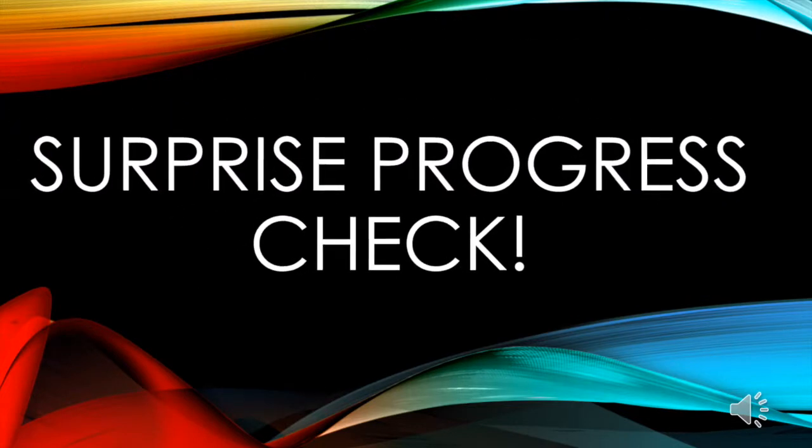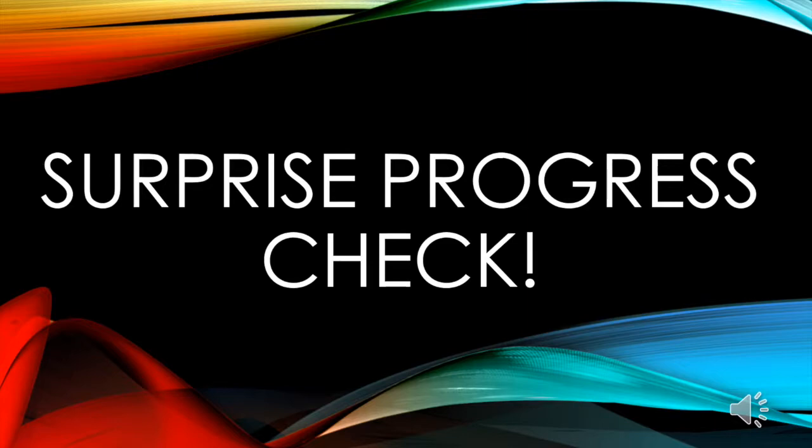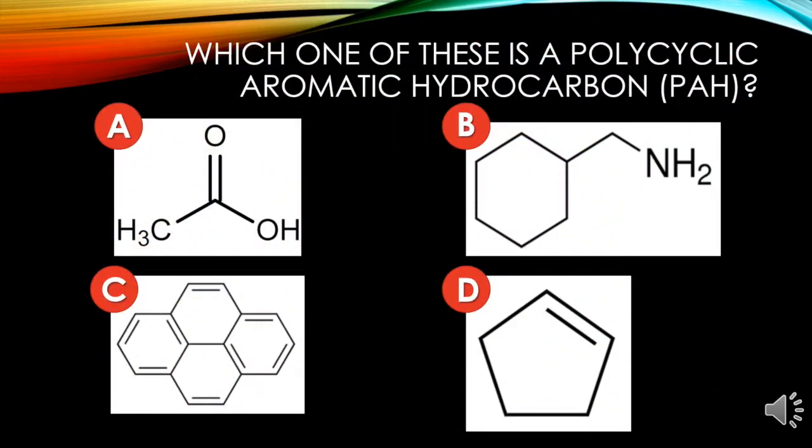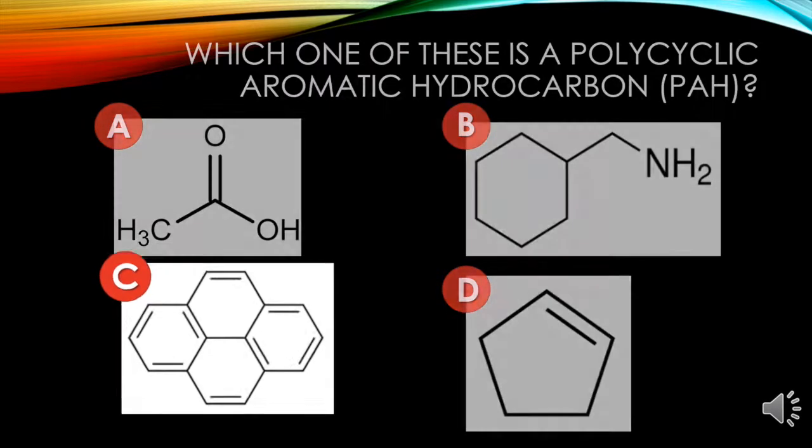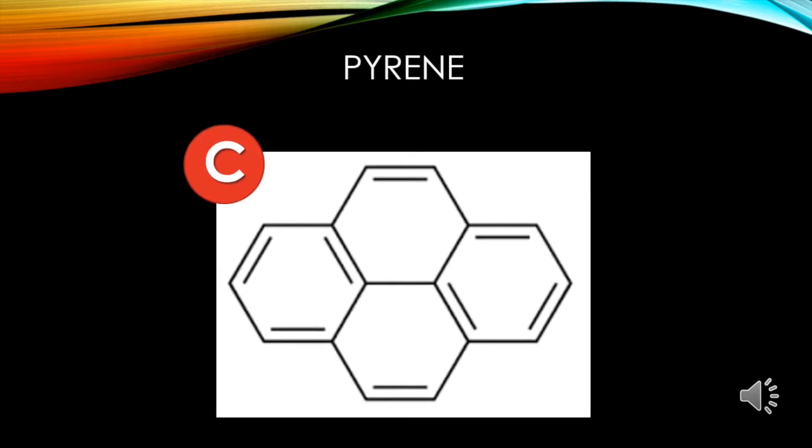So I hope you all have been paying great attention because we have a surprise progress check for you today. Which one of these is a polycyclic aromatic hydrocarbon, otherwise known as a PAH? Take a second and think about it. If you chose the letter C, you are correct. This molecule is called pyrene. It demonstrates four fused benzene rings.